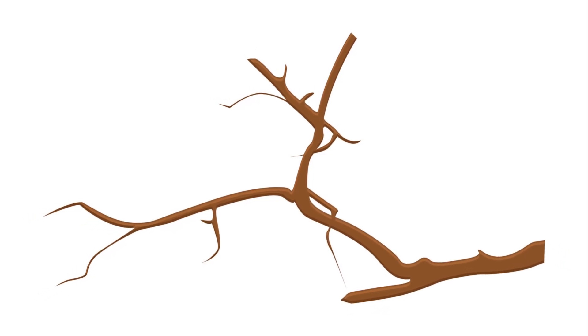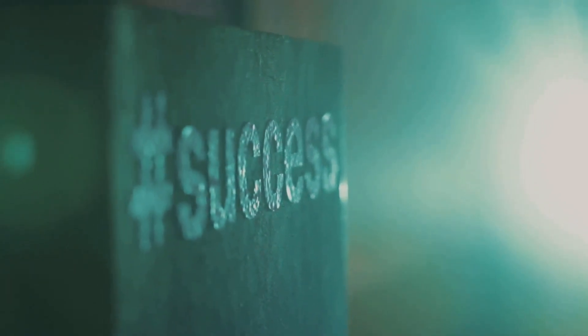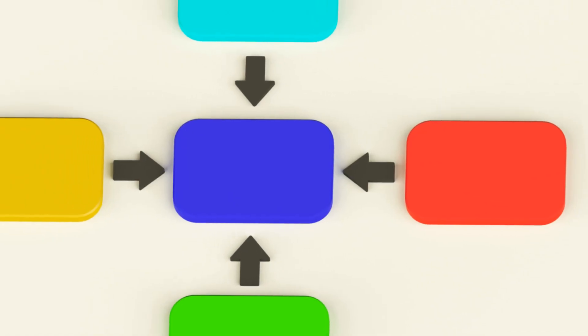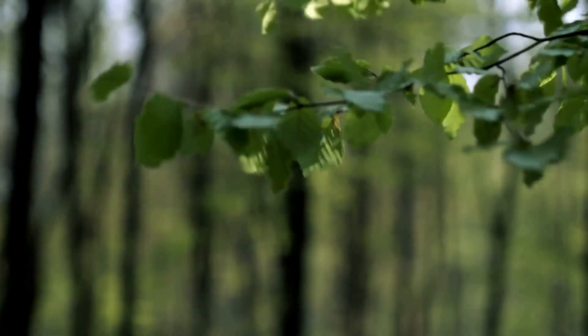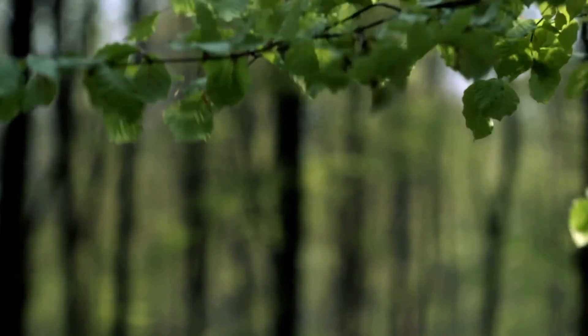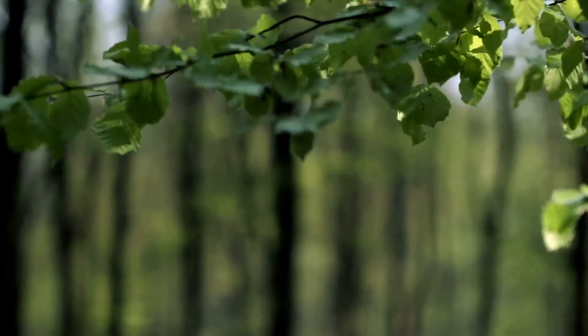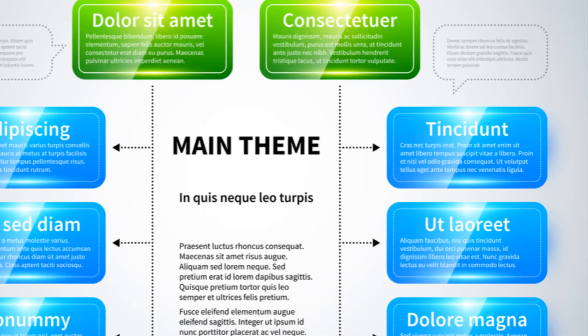Next, we cultivate the sub-branches. These are the supporting details, examples, or more specific ideas related to each main thought. Draw smaller lines branching out from each main branch and label them accordingly. Remember, the beauty of a mind map is in its flexibility. You can add as many sub-branches as you need.